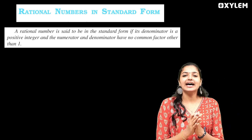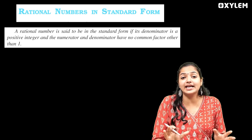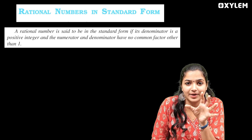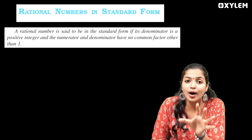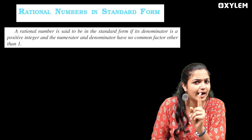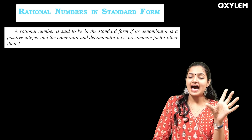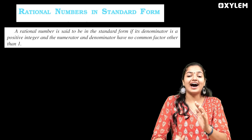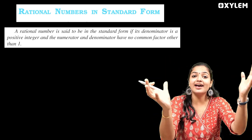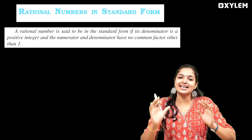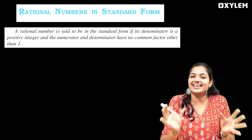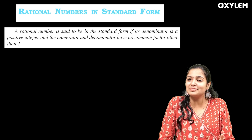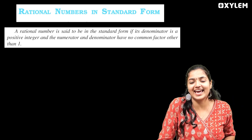If you have a numerator and denominator, you have a rational number. The common factor must be one — that's what makes it a standard form. That's why it's simple.